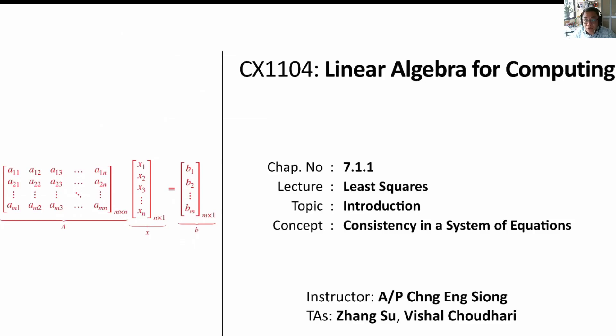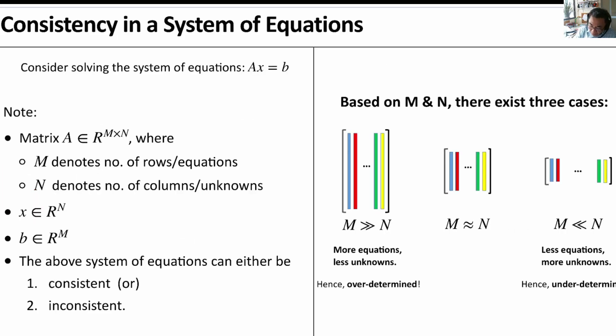This is CX1104, Chapter 7.1.1, least squares. Today we will talk about consistency in a system of equations. The problem we want to solve is again, AX equals to B.